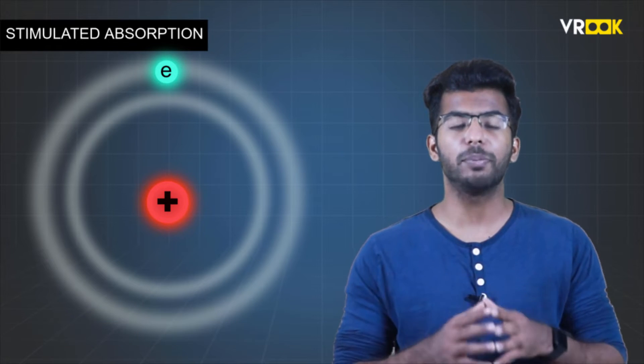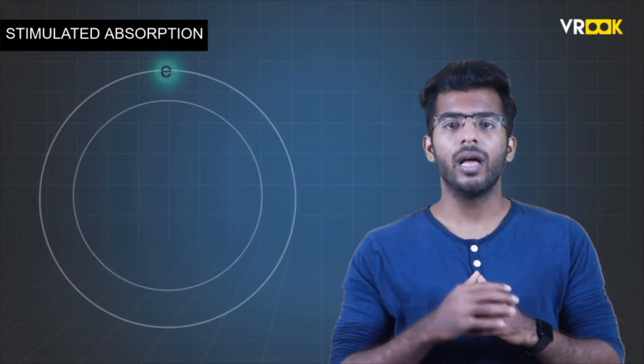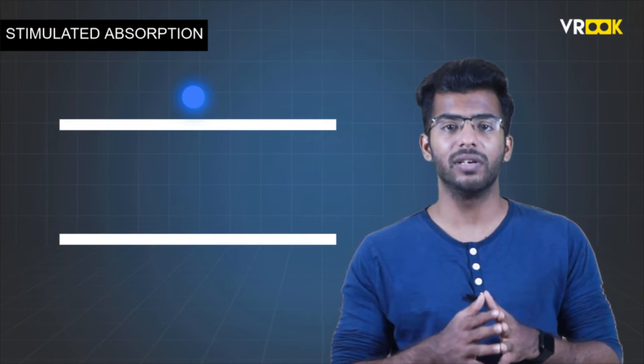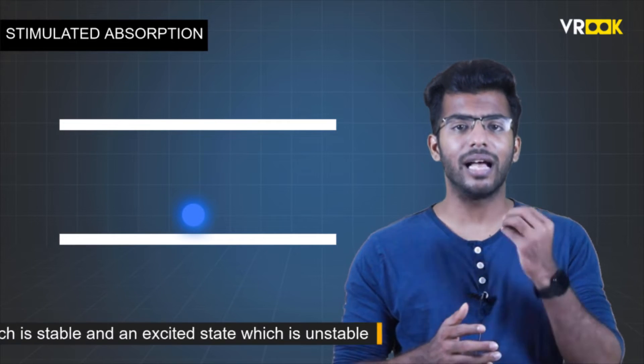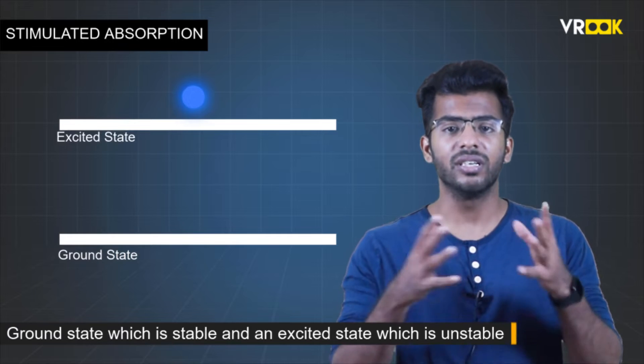Atoms can be at lower energy levels or higher energy levels depending on the energy it has. Every atom has a ground state which is stable and an excited state which is unstable.